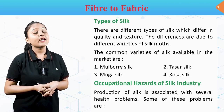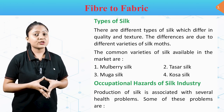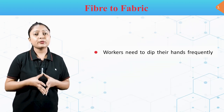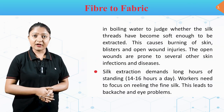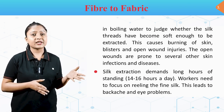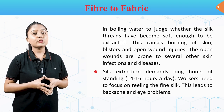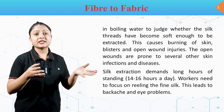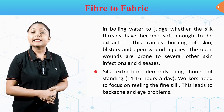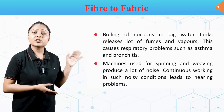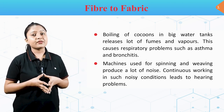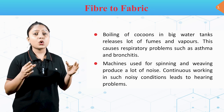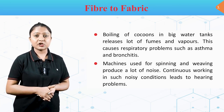Occupational hazards of the silk industry: production of silk is associated with several health problems. Workers need to dip their hands frequently in boiling water to check whether silk threads are soft enough to extract — this causes burning of skin, blisters and open wound injuries. The open wounds are prone to other skin infections. Silk extraction demands long hours of standing, 14 to 16 hours a day, leading to backache and eye problems. Boiling of cocoons releases fumes and vapors, causing respiratory problems such as asthma and bronchitis. Machines used for spinning and weaving produce a lot of noise, leading to hearing problems.